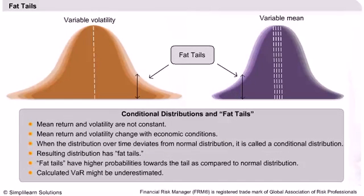Fat tails. In practice, the distribution of return is not normal. There are deviations from the normal behavior such as fat tails, skewness, and instability in the return distributions. From the chart, we see that the curve becomes fatter at the tails if the volatility or the mean return varies with time. This is known as conditional distribution — that is, a distribution that changes with changing conditions. Such curves exhibit fat-tailed distribution with higher than normal probabilities at the lower end of the tails.